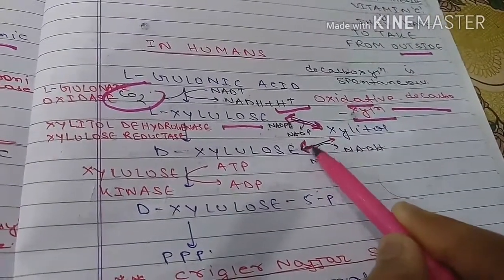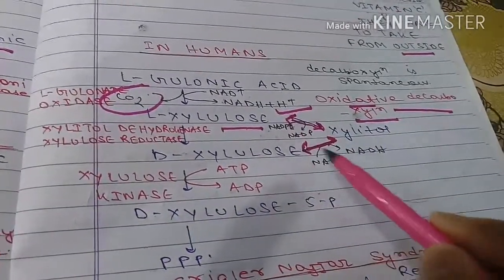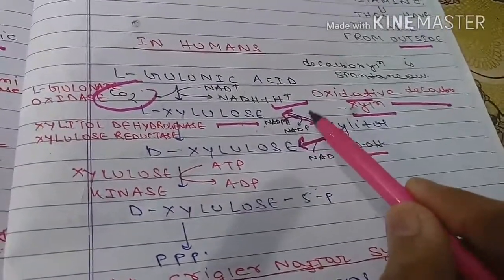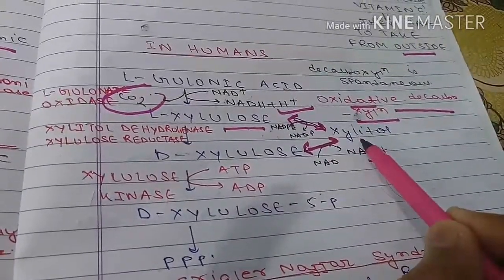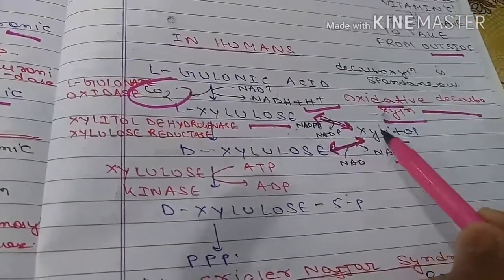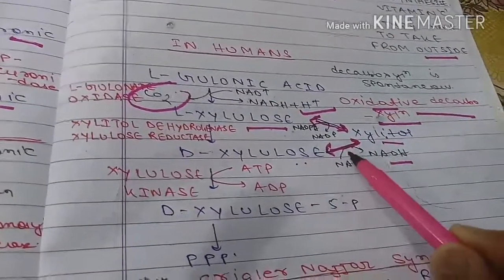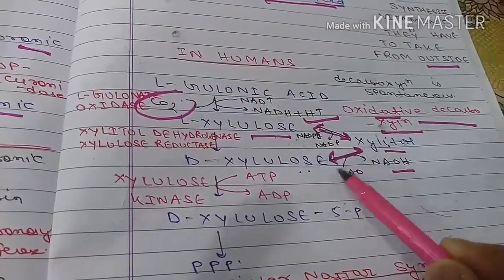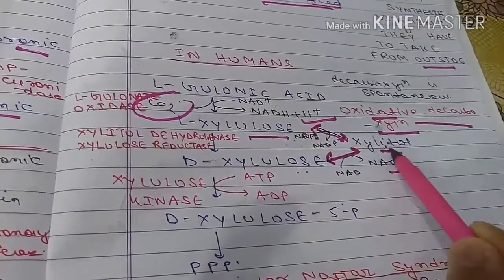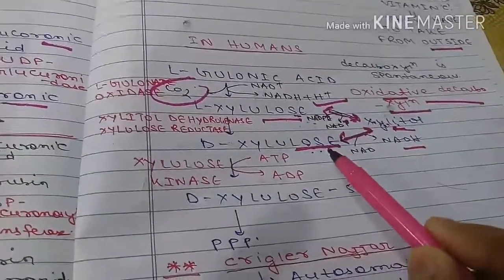L-xylulose is then converted to xylitol in a reversible step. NADPH is utilized, and the enzyme is xylitol dehydrogenase (also called xylulose reductase). This step is reversible.